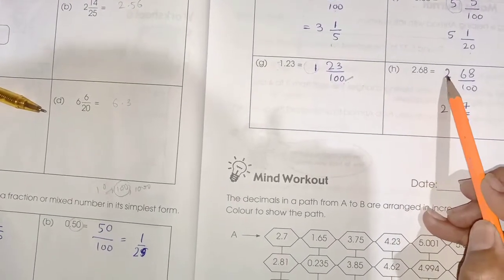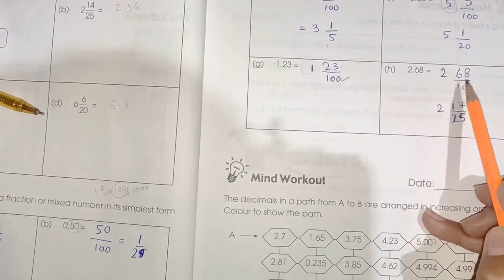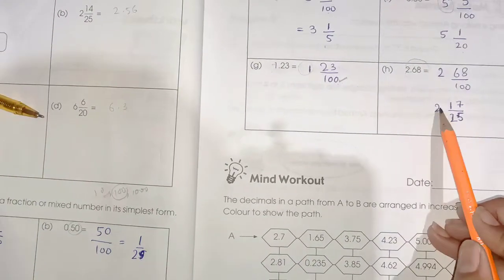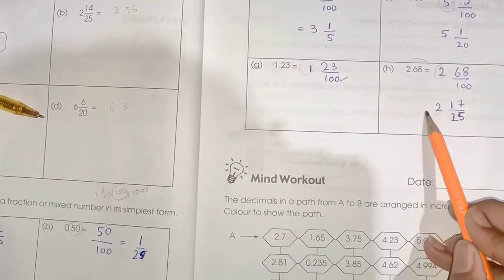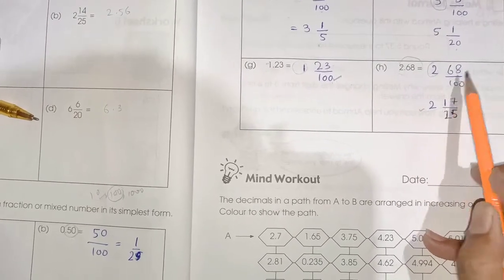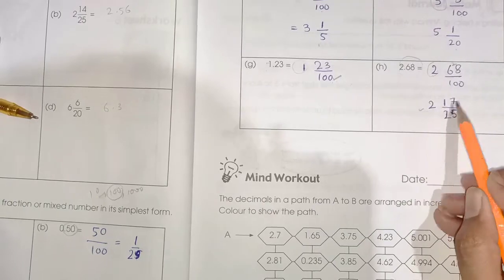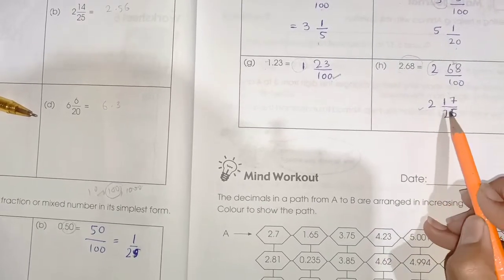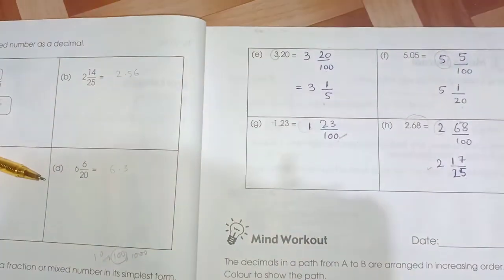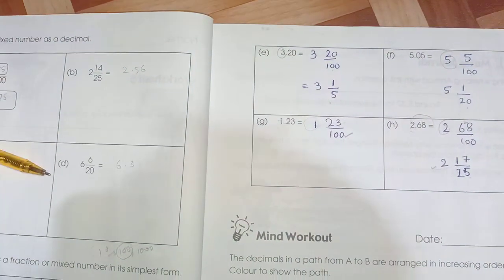2.68: 2 is the whole number, 68 divided by 100 because again we have three numbers. So this is the explanation of page number 26 and 27.